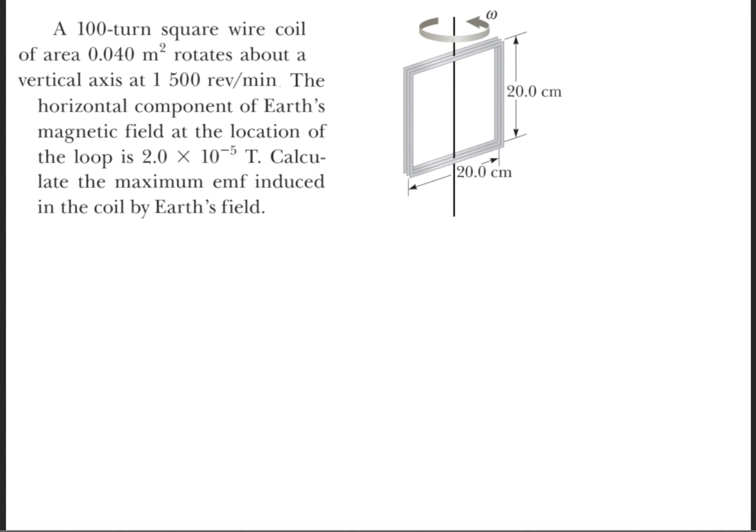We'll begin this question by using this formula. The EMF is equal to the angular velocity times the number of turns times the area times the B field multiplied by the sine of omega t.